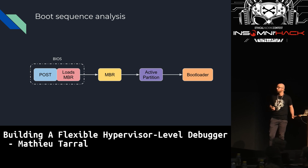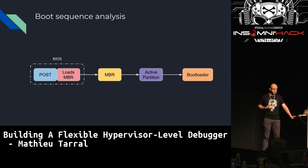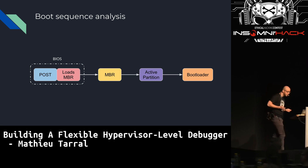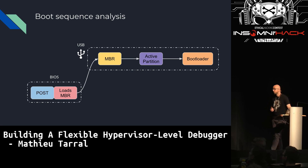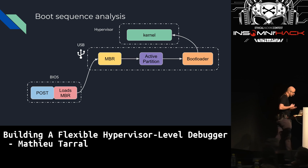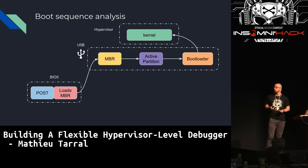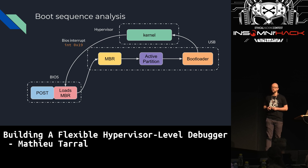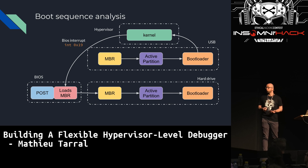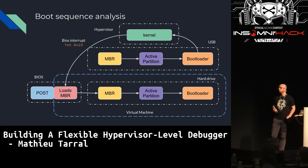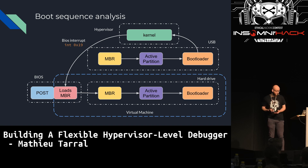Another interesting use case is boot sequence analysis. The BIOS runs the POST, loads the MBR, which loads code from the active partition, then loads the bootloader — GRUB or NTLDR for Windows. What we can do is use a USB stick to boot from USB, load a hypervisor kernel into memory, which creates a virtual machine, and send interrupt 0x19 — a BIOS interrupt telling the BIOS to reload the first boot device, usually the hard drive. So we restart the boot sequence, but this time inside a virtual machine — we've virtualized the boot sequence and can fully analyze it under the hypervisor.